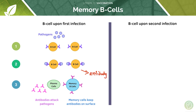Initially when the B cell detected the pathogen and produced the specific antibody, it would have divided to form plasma cells, which are responsible for producing antibody in really large quantities. So upon this initial exposure, not only are you generating antibody from plasma cells to fight the pathogen there and then, but you're also producing memory B cells for the future.